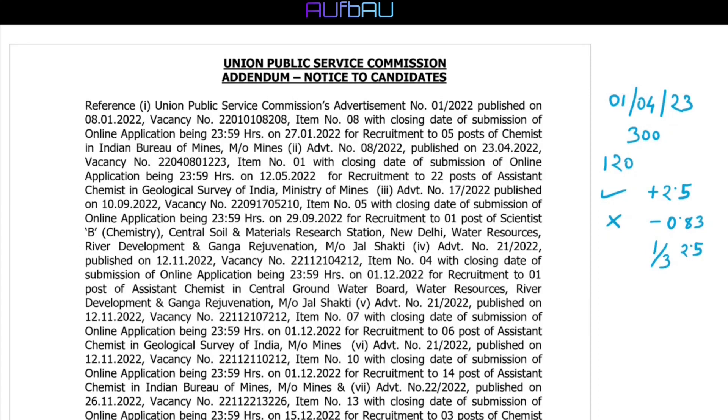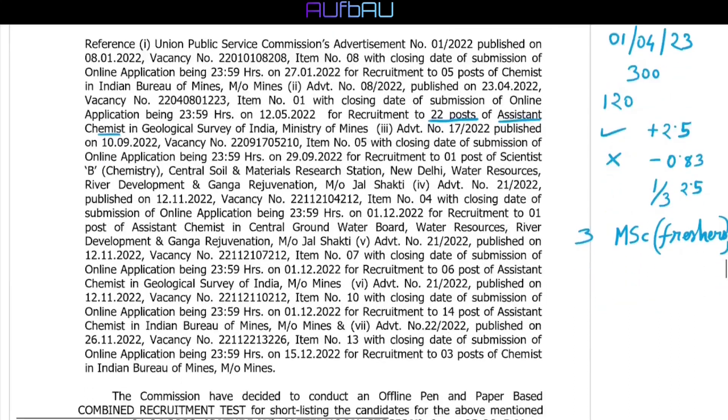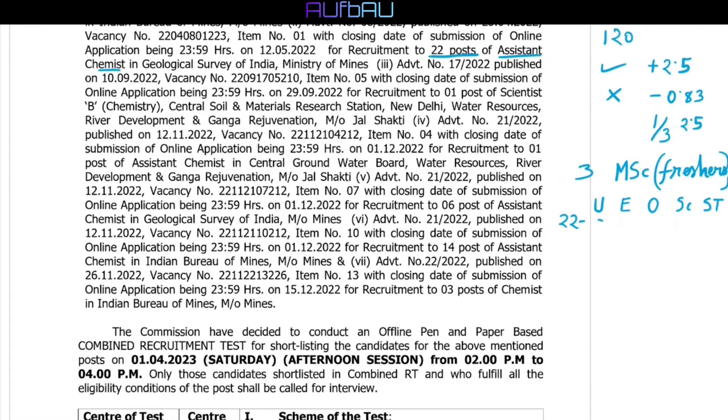Now this particular exam has only 3 kinds of posts which are applicable for MSc students who are freshers. One is 22 posts of assistant chemists in Geological Survey of India. Among those 22 posts, if we divide category wise, then 9 seats were for unreserved candidates, 2 are for EWS, 6 for OBC, 3 for SC and 2 for ST candidates. The second advertisement which was applicable for MSc freshers candidates was one post of assistant chemist in Central Ground Water Board, CGWB, and that one post was assigned to UR. And in the third category, there was again 6 posts advertised from Geological Survey of India for assistant chemist. Among those 6 posts, 5 are for unreserved and one is for OBC. So there are total 29 posts for MSc chemistry candidates which I think is a good opportunity.